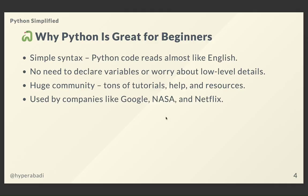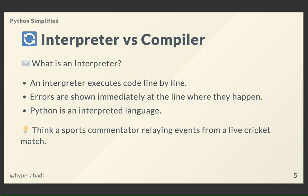Let's understand interpreter versus compiler. Any programming language broadly belongs to one of these two categories. An interpreter executes code line by line, and errors are shown immediately at the line where they happen. Python is an example of an interpreter-based language. Think of an interpreter like a sports commentator relaying a live event from a cricket or football match.